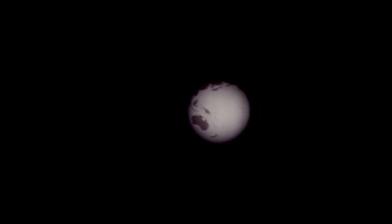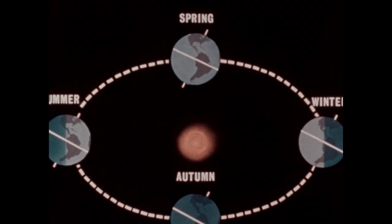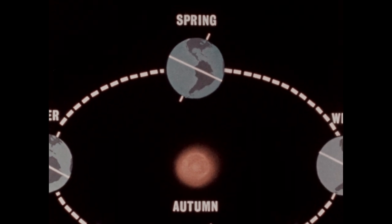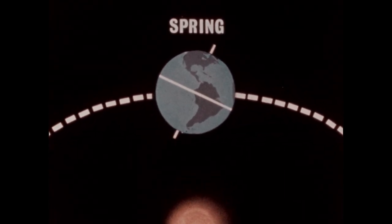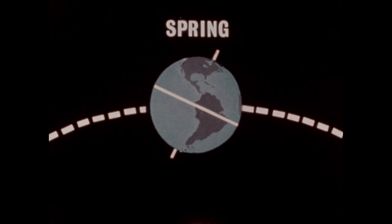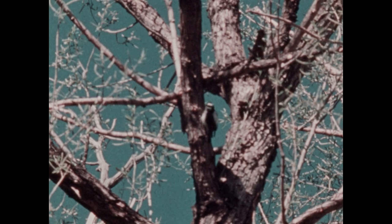To see how the tilted axis helps to cause the seasons, we'll follow the Earth through its orbit for one full year, and notice the tilt of its axis on the first day of each of the four seasons in the northern hemisphere. On the first day of spring, about March 21st, the Earth is about here in its orbit around the sun. In northern North America, the weather has begun to turn warmer after the cold of winter.